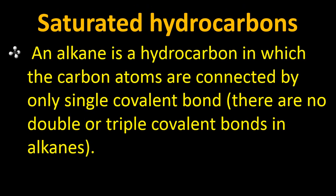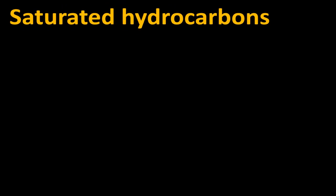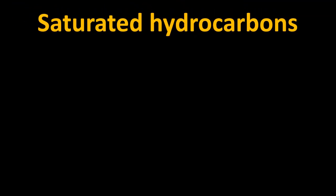An alkane is a hydrocarbon in which the carbon atoms are connected by single covalent bonds — there are no triple or double covalent bonds present in alkanes. For example, one carbon atom is methane. The suffix '-ane' comes from alkanes having a single bond.